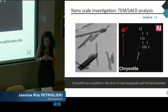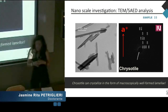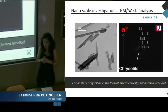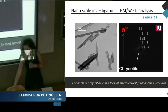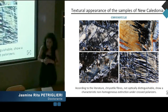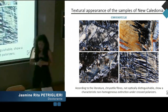Finally, TEM associated with diffraction patterns confirmed the identification of the chrysotile variety. It is so interesting that chrysotile can crystallize in the form of macroscopically well-formed lamellae. For this reason, we decided to study more in detail the textural and morphological appearance of the New Caledonia samples.